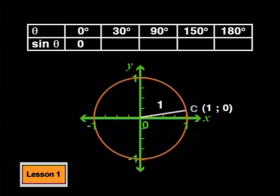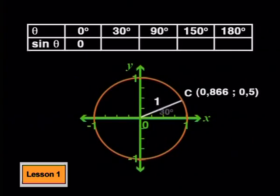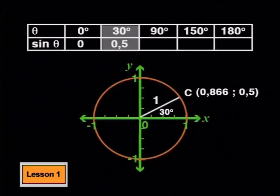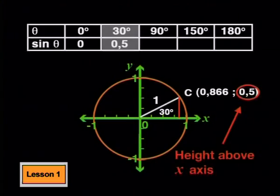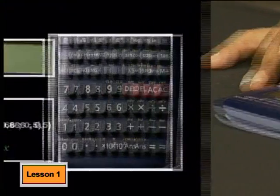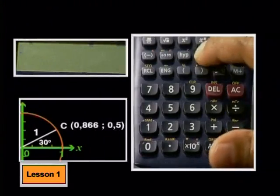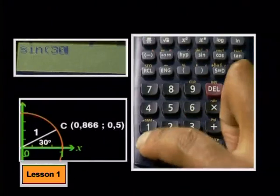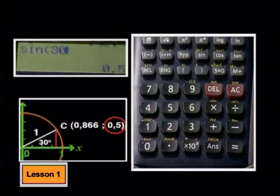Then we rotate the line segment so that theta is 30 degrees. We can read off sine theta here. It's exactly 0.5. That makes sense. That's the same answer that we found in our right angle triangle earlier on. You can also check this on your calculator. If you press the keys for sine and then 30 degrees, you will get 0.5. This is also the height of the end point of the line segment above the x-axis.